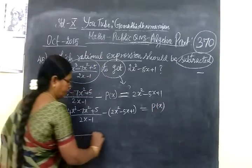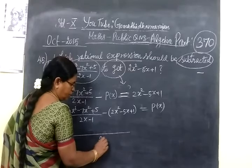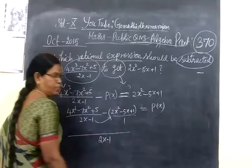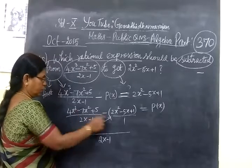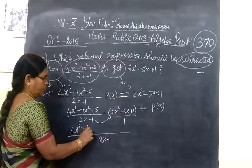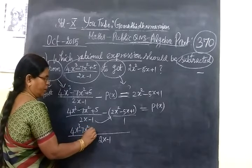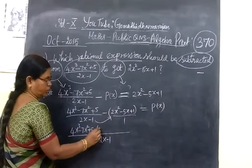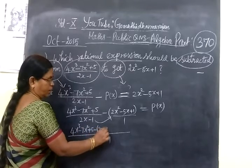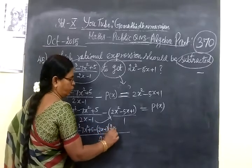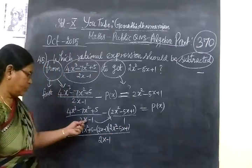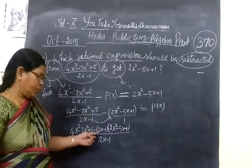Now you take LCM. You put your long line, 2x minus 1. This is the entire cross multiplier. So this you write as it is: 4x cube minus 7x square plus 5 minus, 2x minus 1 times 2x square minus 5x plus 1. Just here cross multiply.